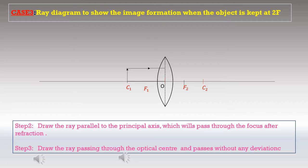Case 3: The ray diagram to show image formation when the object is kept at 2F. This is the most difficult case because we draw the object at C1 and the image must also form exactly at C2 on the other side. Any mistake in drawing will result in the image not appearing at the correct position. This case was discussed in detail in a previous video.